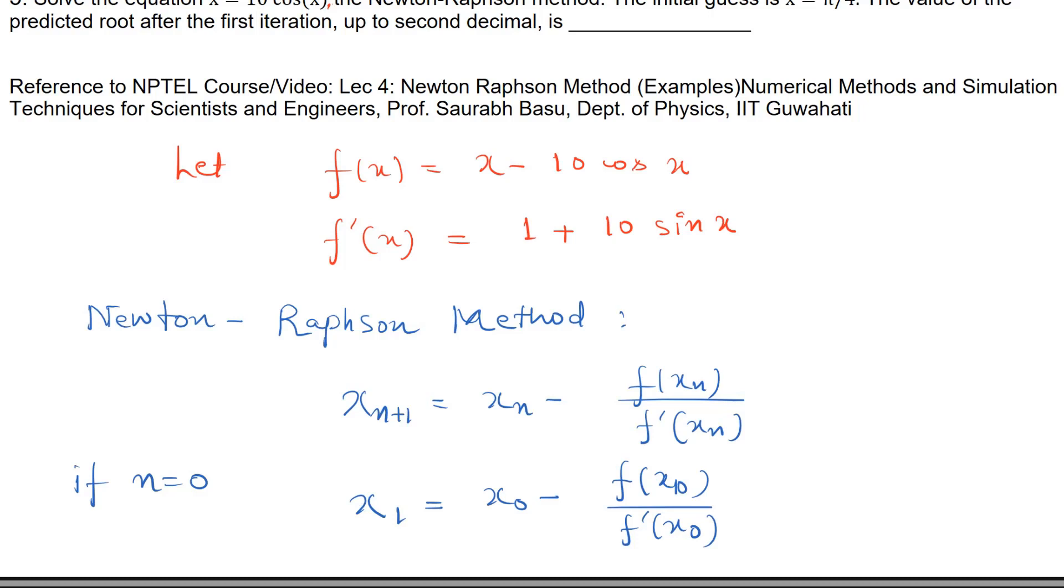In the problem, initial guess is also given: x₀ equals π/4. This value is already given to us.